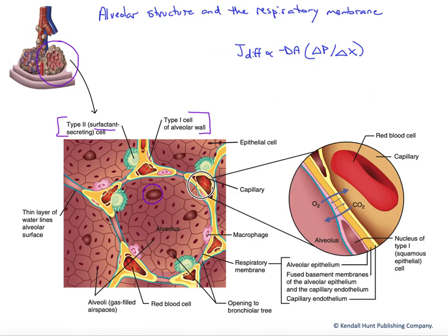You can see if we blow it up over here on the right, we blow up this little section of the alveolar wall and where it meets up against a capillary. We have air over here, and we have blood or plasma, the liquid portion of blood on this side. The type 1 cells are forming half of this barrier between the air and the blood.